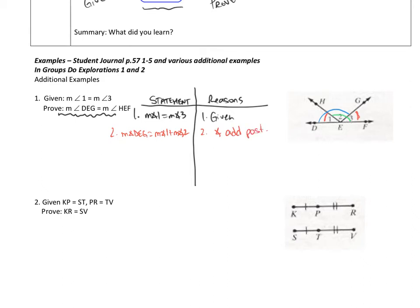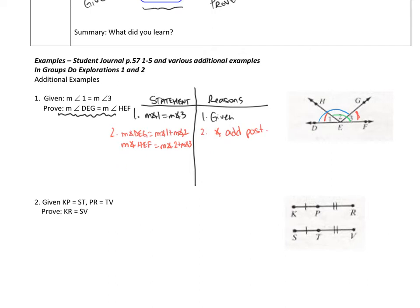I could put the next statement as step 3, or as part of step 2 — I'm going to choose to keep it as part of step 2. Angle HEF is made up of angle 2 plus angle 3, so: the measure of angle DEG also equals the measure of angle 2 plus the measure of angle 3. I kept it in step 2 because it's the same reason — the angle addition postulate.